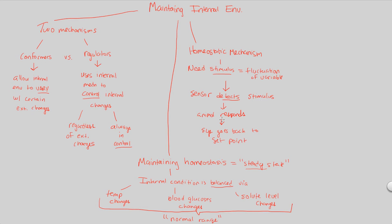Think of it like this: you're in a chilly room. The cold temperature is the stimulus. You detect it through external and internal detecting mechanisms. You respond by putting on a coat or jacket. Your body temperature gets back to a set point. You had a variation, detected it, responded to it, and maintained a homeostatic steady state. That's a simple homeostatic mechanism.